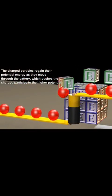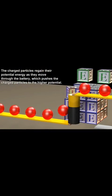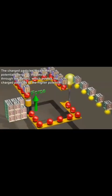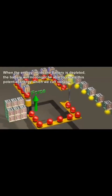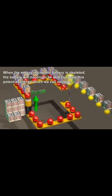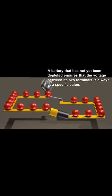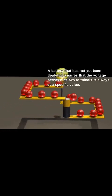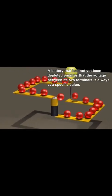The charged particles regain their potential energy as they move through the battery, which pushes the charged particles to the higher potential. When the energy inside the battery is depleted, the battery will no longer be able to create this voltage. A battery that has not yet been depleted ensures that the voltage between its two terminals is always at a specific value.